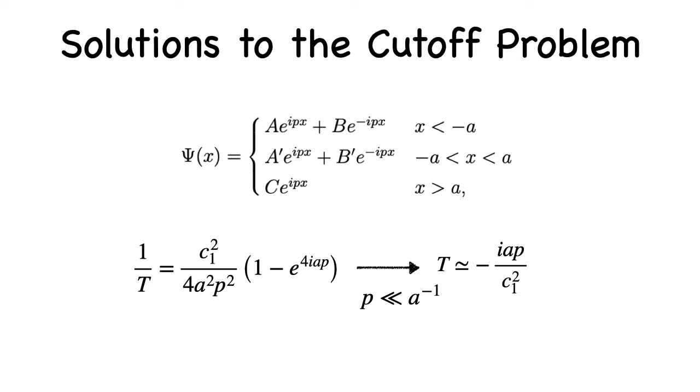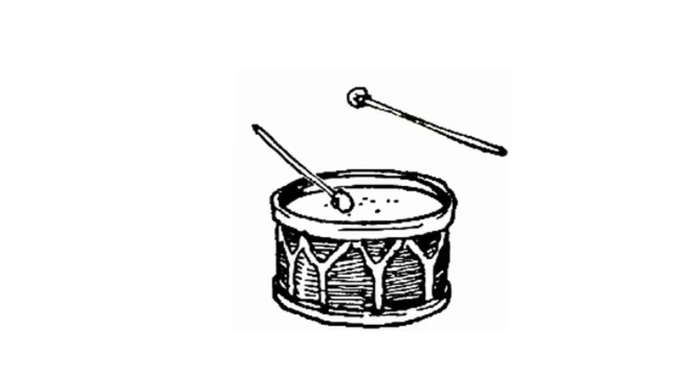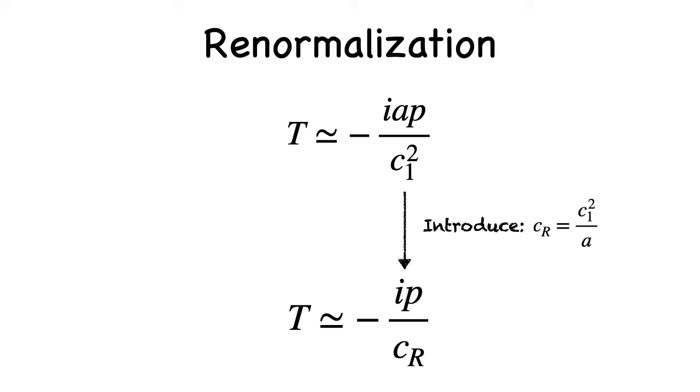And now we're ready to do the next step, which is the step of renormalization. So here we have a drum roll, and we get to just define the ratio of a over c1 squared as c sub r, which is the renormalized coupling. And then we obtain the following result that's independent of the cutoff. Now, we could say that this is a bit bizarre, because all we've really done is introduced another variable. But the point of c sub r is that we can hold it fixed, provided that we adjust a and c1 in compensatory ways.